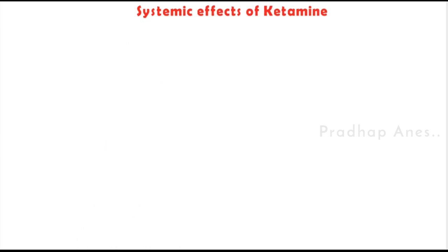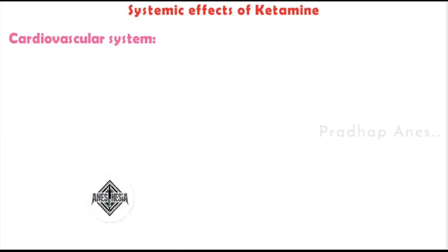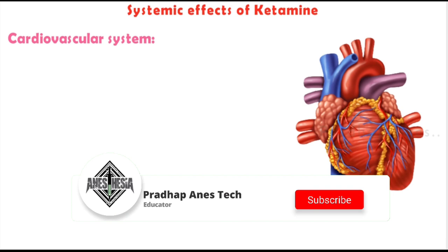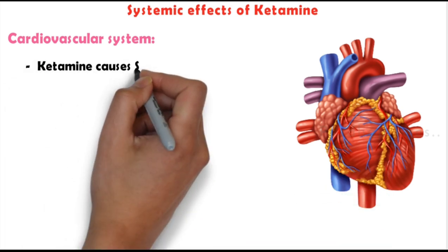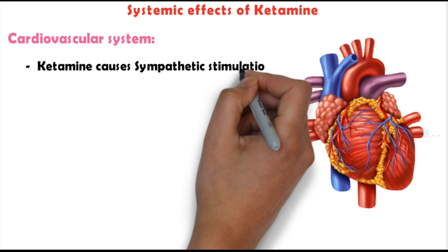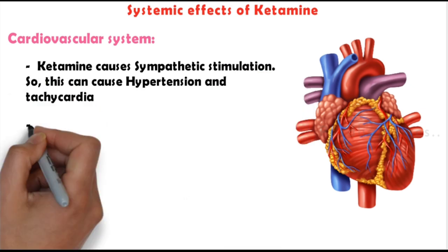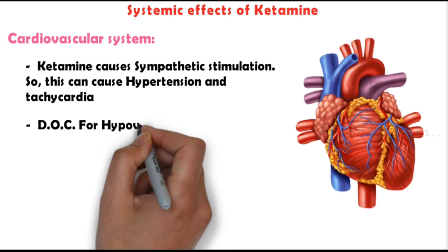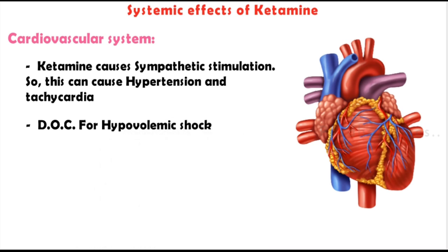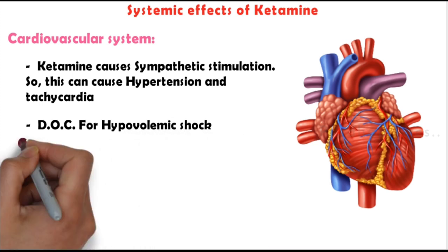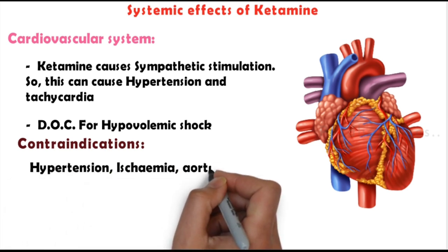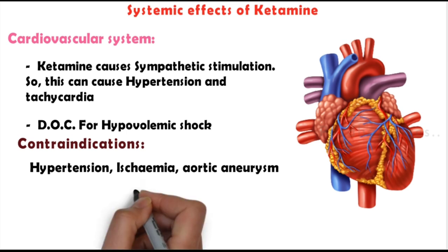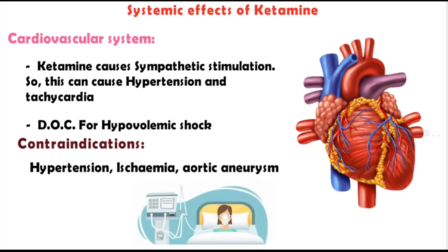Systemic effects — Cardiovascular system: Ketamine causes sympathetic stimulation, which can cause hypertension and tachycardia. Due to this reason, it is a drug of choice for hypovolemic shock. Contraindications include hypertension, ischemia, and aortic aneurysm. Do not use this drug for patients with high oxygen demand, because it increases heart rate and thereby increases oxygen demand.